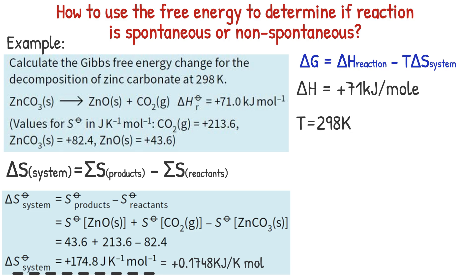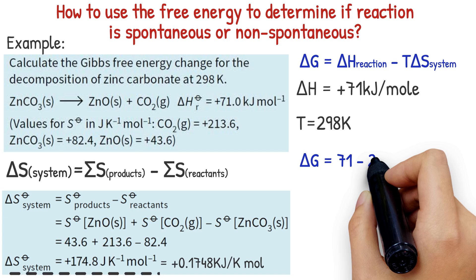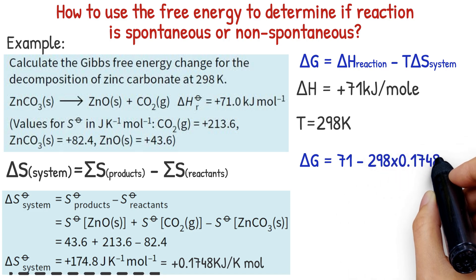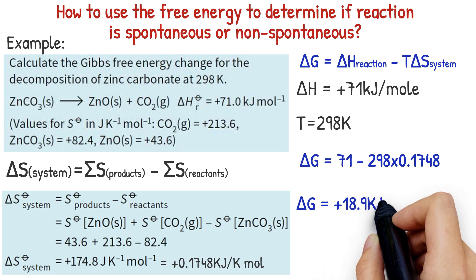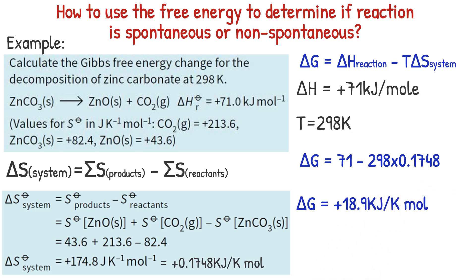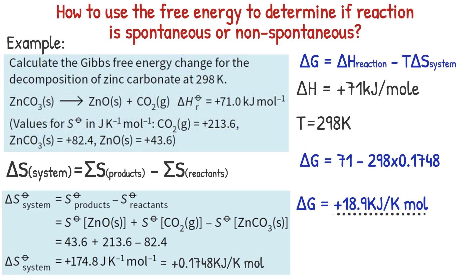Now we have all the data needed to calculate the free energy change for the decomposition of zinc carbonate by replacing everything in the equation. The result shows that the free energy change is equal to plus 18.9 kilojoule per mole. As the value of free energy change is positive, this reaction is not spontaneous at 298 Kelvin.